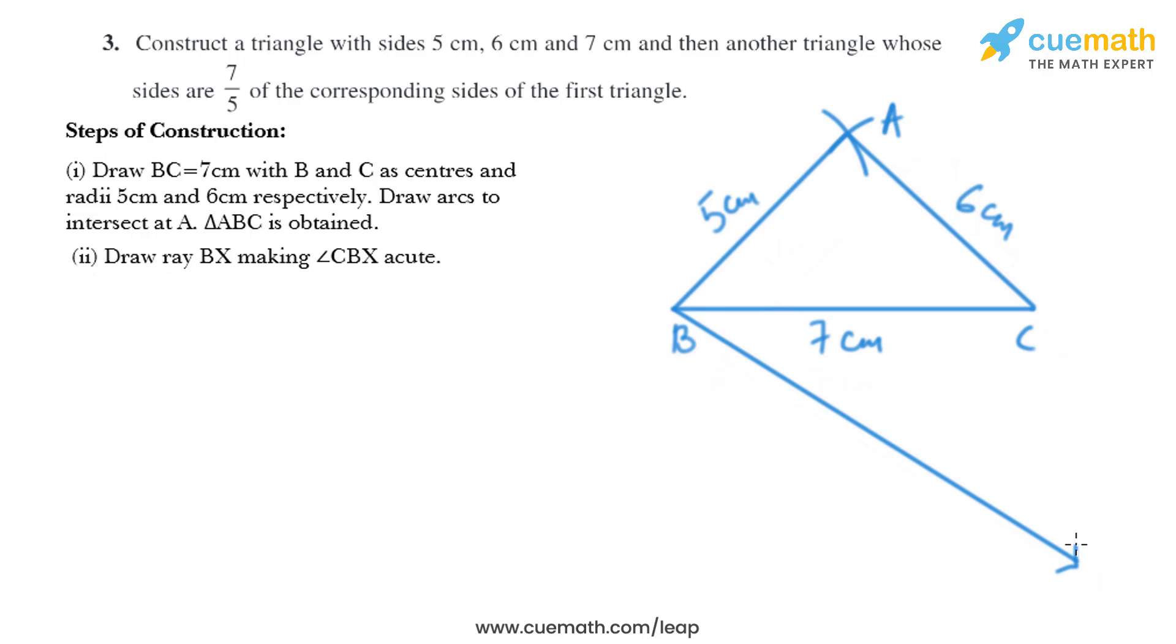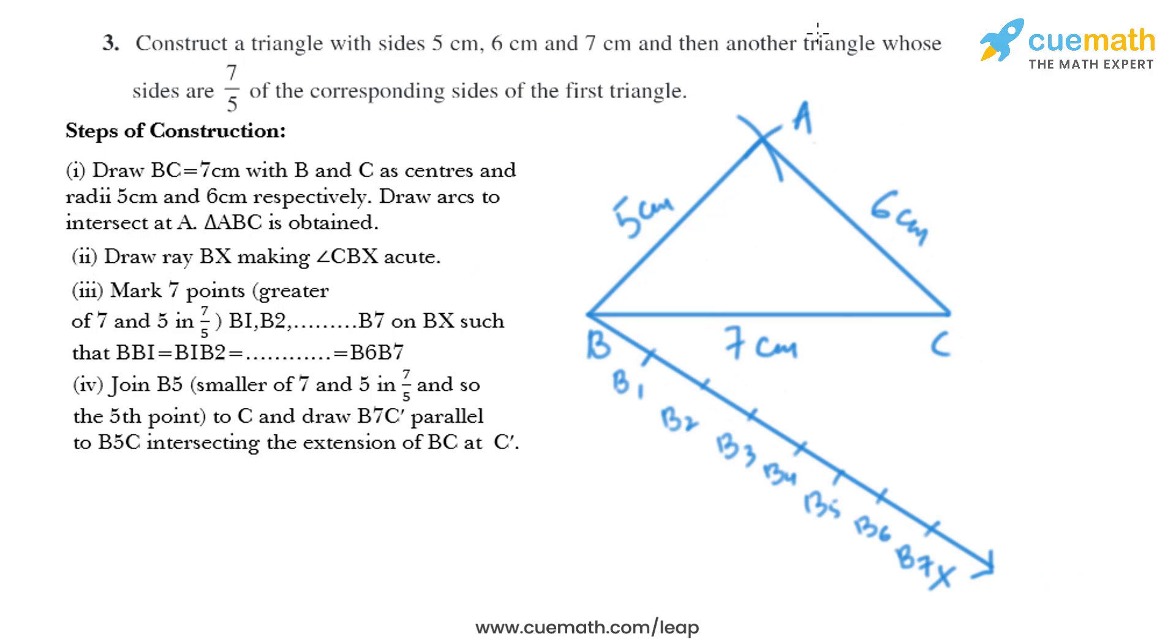Now in the next step we'll mark 7 points on BX: B1, B2, B3, like that till B7, such that BB1 equals B1B2 equals B2B3, and so on.